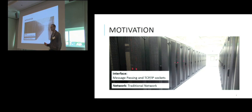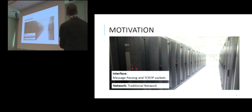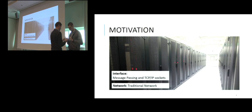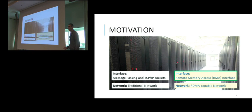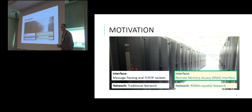The traditional models to program these parallel systems are message passing and TCP IP sockets. These models were designed for traditional networks such as Ethernet. However, remote direct memory access networks, which have been used in high-performance computing for years, are gaining quick adoption in modern data centers. These RMA networks provide more performance than traditional networks at similar cost.